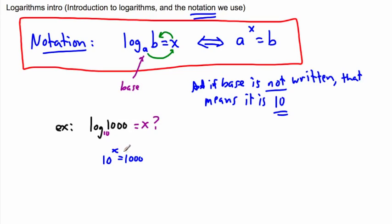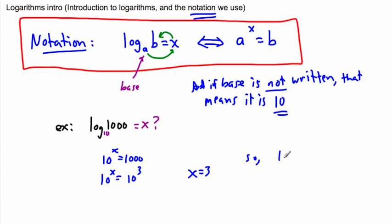Because of that, you can say: I can write a thousand as a power of 10. A thousand is the same thing as 10 to the power of 3. Now I can use my rules of exponents — if I have the same base, 10 to the power of x equals 10 to the power of 3, then x equals 3. So log of a thousand equals 3.